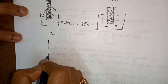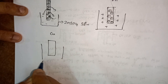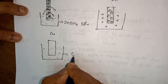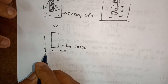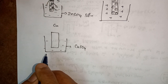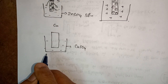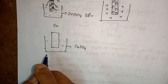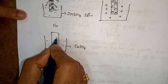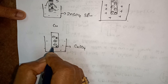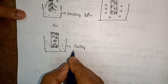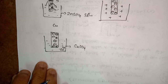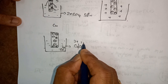Now I take a copper rod and keep this copper rod in copper sulfate solution. Copper rod is made up of copper metal ions and electrons, because all metals are considered to be the assemblage of metal ions along with electrons — we say the metal ions are present in a sea of electrons. In the copper sulfate solution, Cu²⁺ ions are present.